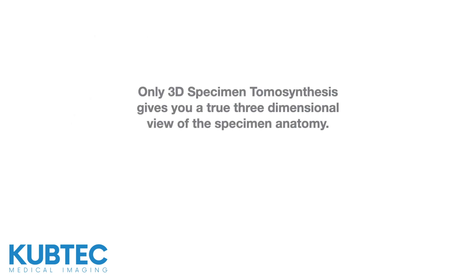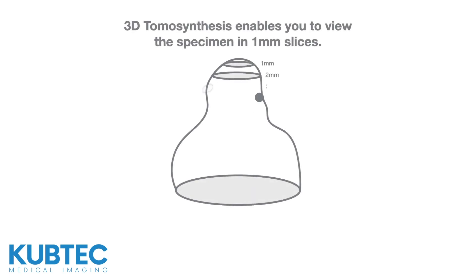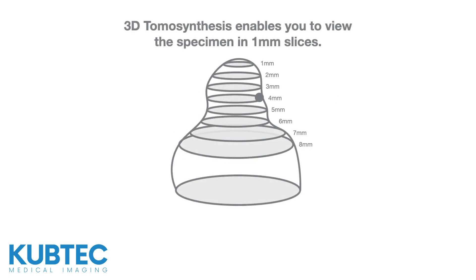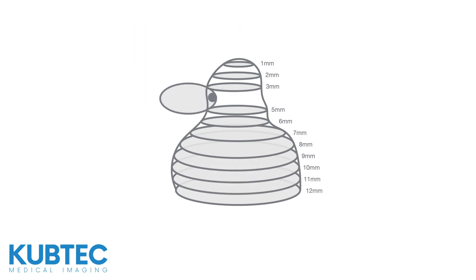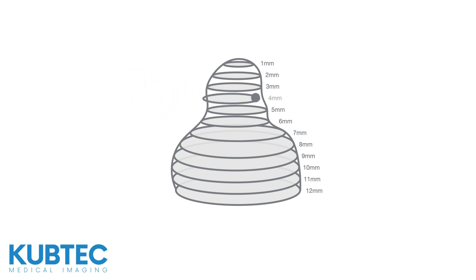Only three-dimensional specimen tomosynthesis gives you a true three-dimensional view of the specimen anatomy. Three-dimensional tomosynthesis enables you to view the specimen in 1mm digital slices. Each slice has its own margin. In this case, we can see a positive peripheral margin on slice 4.